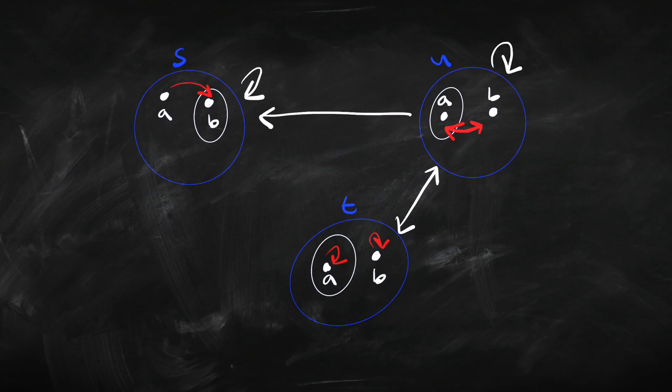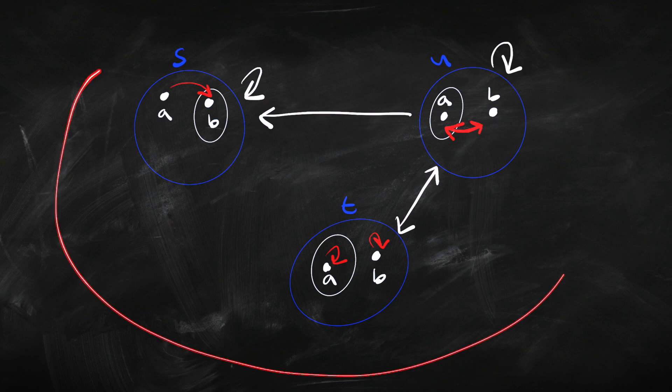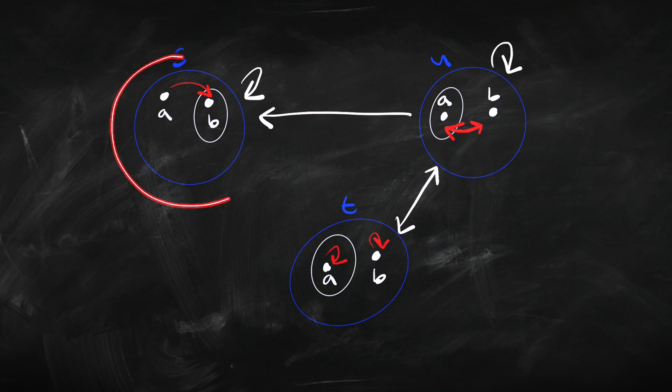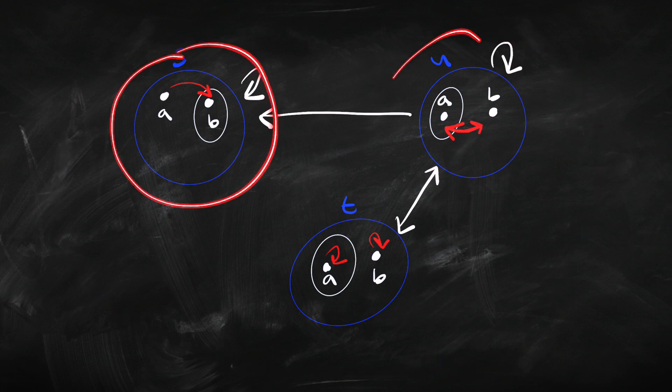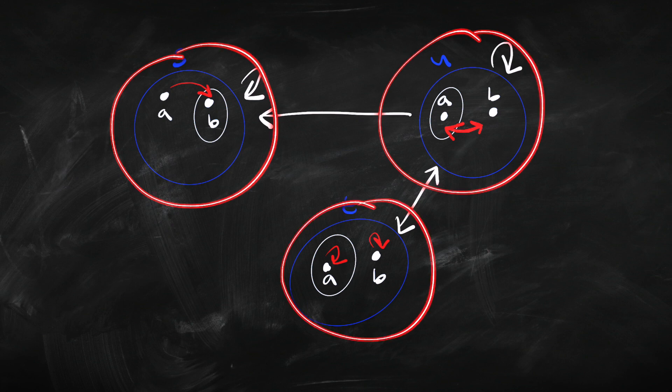So let's go back to the idea of a constant domain model. It's something that looks like this, where every possible world has the same things in it. The domain of each world is the same. In this model, it's got A and B in each world. So, a variable domain model is one that has potentially different things in each domain, or at least not exactly the same.